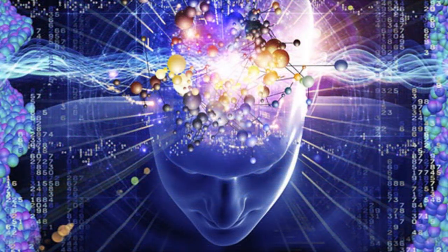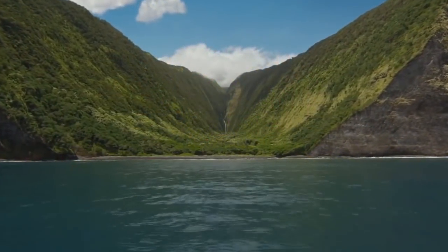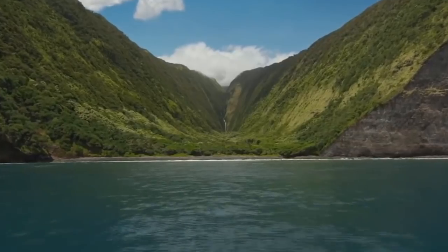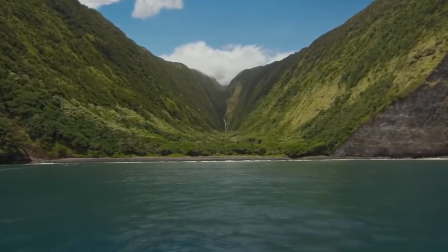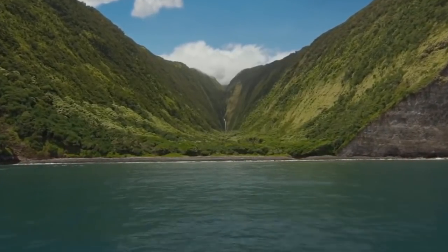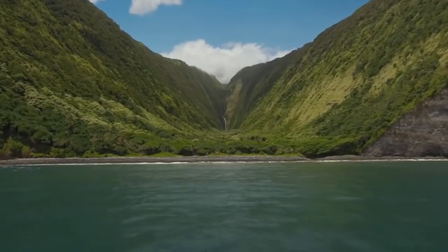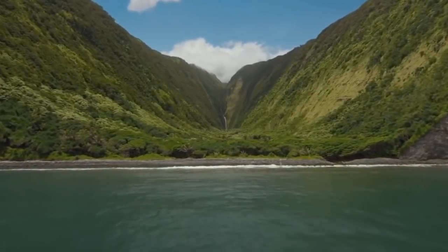Morphic resonance is, in his view, the influence of like upon like through space and time. He believes these fields are different from electromagnetic fields because they reverberate across generations with an inherent memory of the correct shape and form.